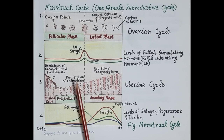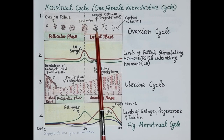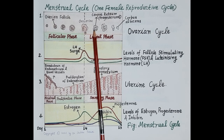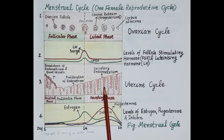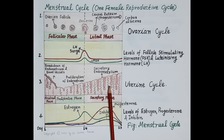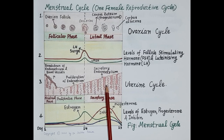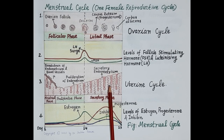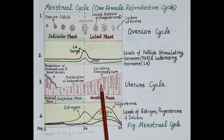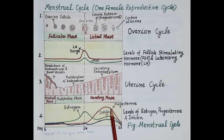After ovulation, the ruptured follicle develops into the corpus luteum, which produces large amounts of progesterone and comparatively less estrogen. Progesterone makes the endometrium secretory, increases blood supply, and stimulates uterine glands to increase secretion to provide nutrition to a fertilized egg. Exogenous supplementation of progesterone makes the endometrium hypersecretory and thus not suitable for implantation of the embryo. Both exogenous estrogen and progesterone prevent implantation of the embryo, thereby preventing pregnancy.